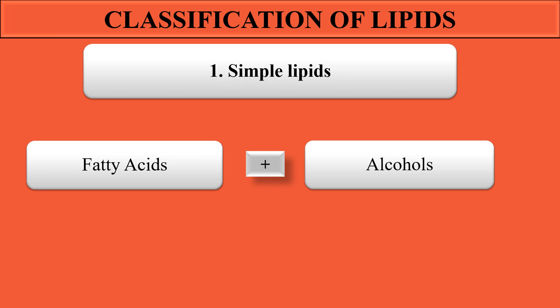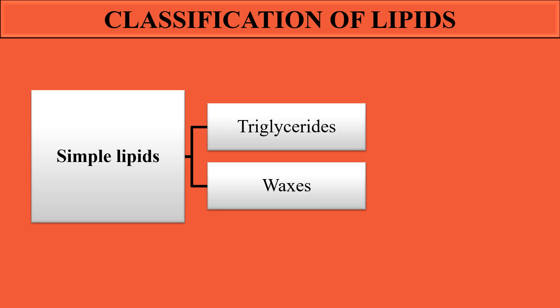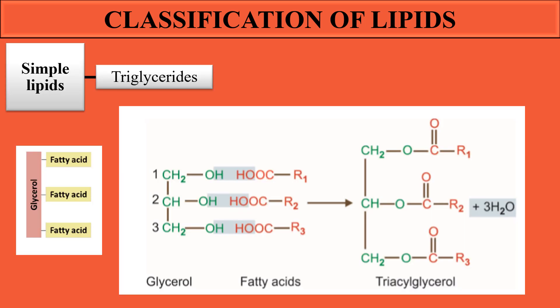First, simple lipids. As the name indicates, these are the simple form of lipids that have fatty acids attached to alcohol — they simply consist of fatty acids and alcohol. Examples of simple lipids include triglycerides and waxes.